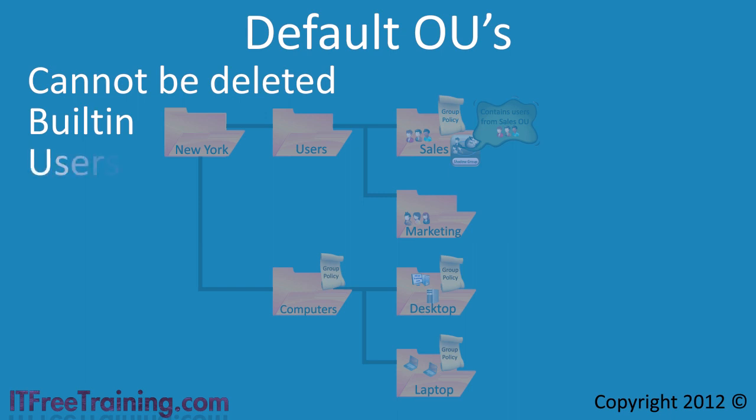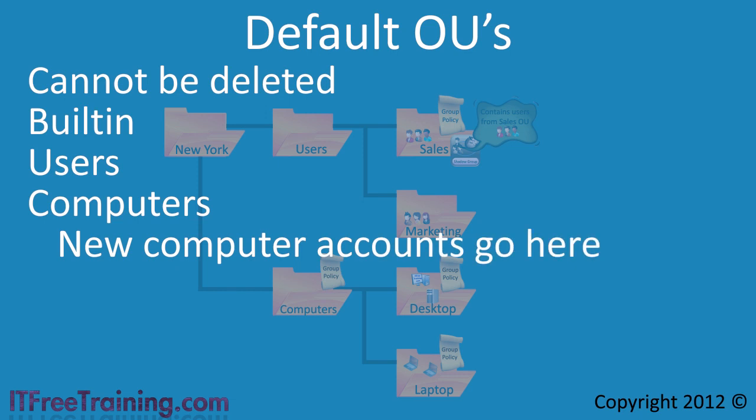The next default OU is Users. This will contain the default users that are created when Active Directory is first installed, for example the default administrator's account. Since this OU does not allow Group Policy to be applied, you will more than likely move users that you create here to another OU, like the New York OU used in the previous example. The next OU is the Computers OU. When you add a computer to the domain, the computer account for the computer is put in this OU. Group Policy cannot be applied to this OU, so you are more than likely going to move the computer account to another OU after it has been created.